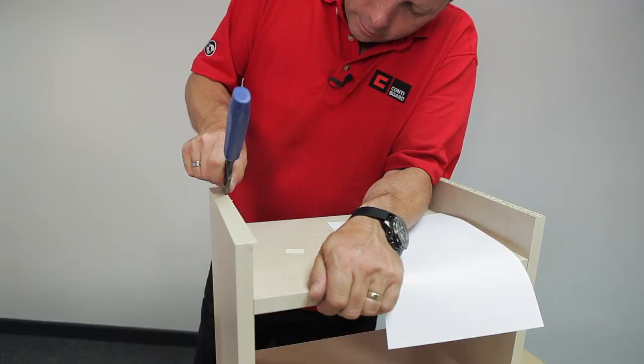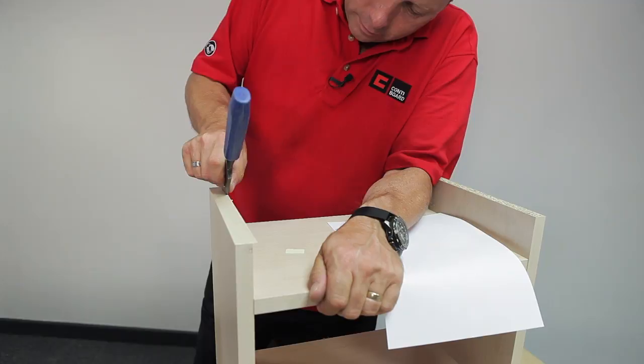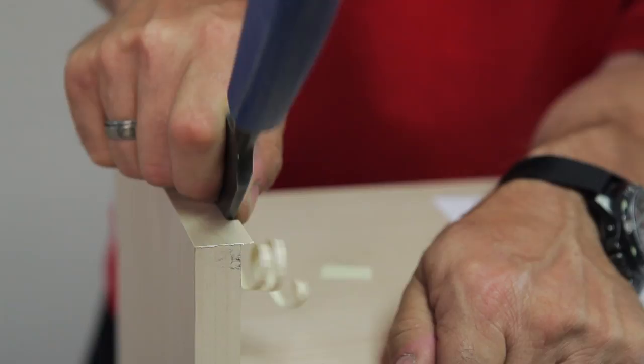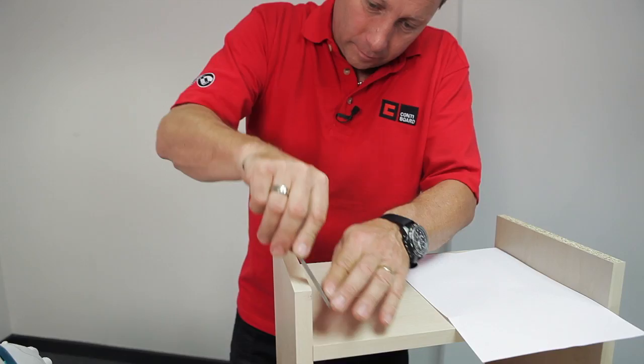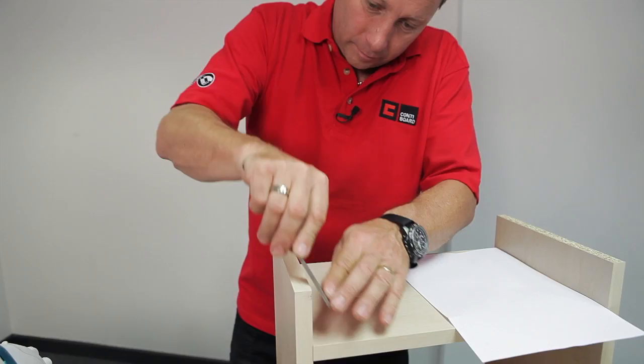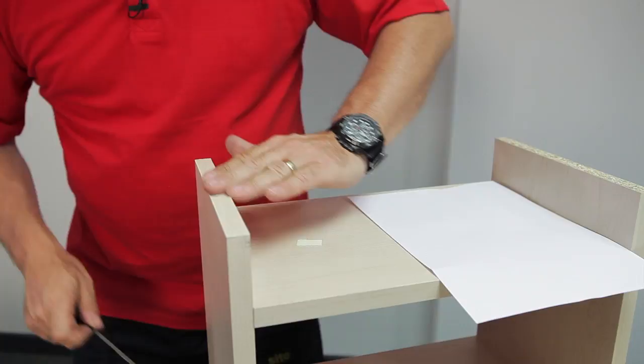Repeat on the other side. Once you've completed it to this point, you can use a file or glass paper to take the sharp edge off. And that's how you complete your iron-on edging.